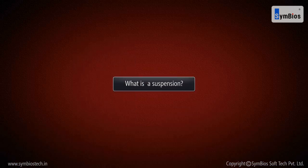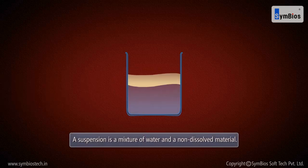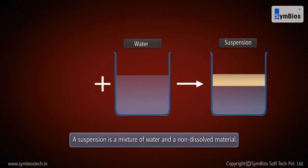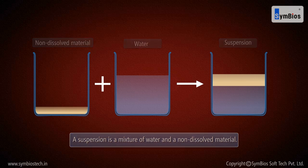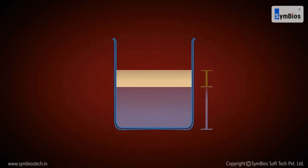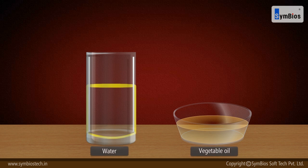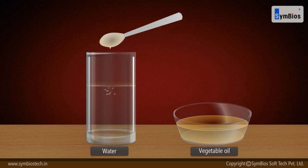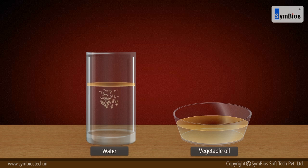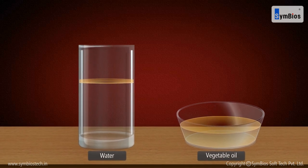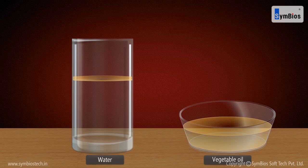What is a suspension? A suspension is a mixture of water and a non-dissolved material. The mixture separates on standing. Take some water in a glass and add a tablespoon of vegetable oil. You will notice that no matter how much you try, the oil does not dissolve. On standing, you will see that oil separates and settles at the bottom. Such characteristics are that of a suspension.